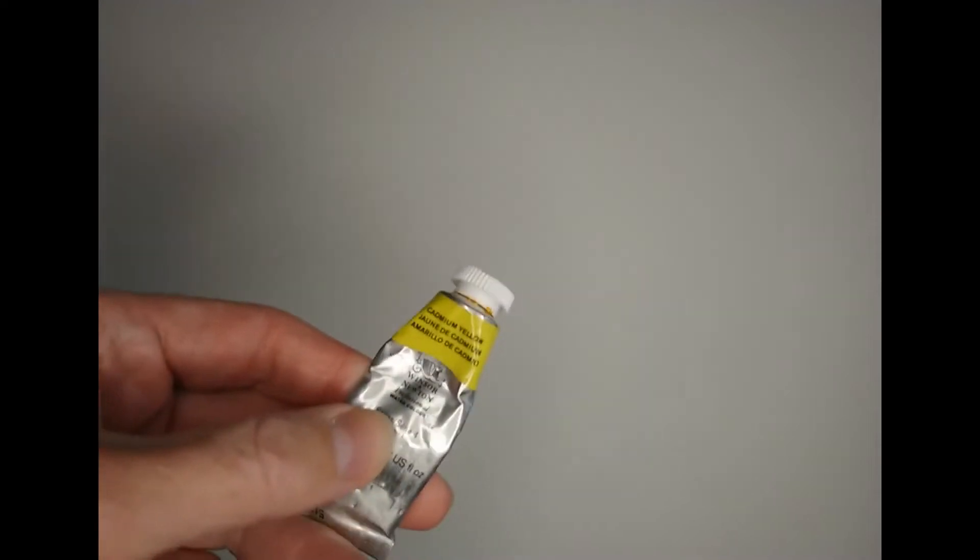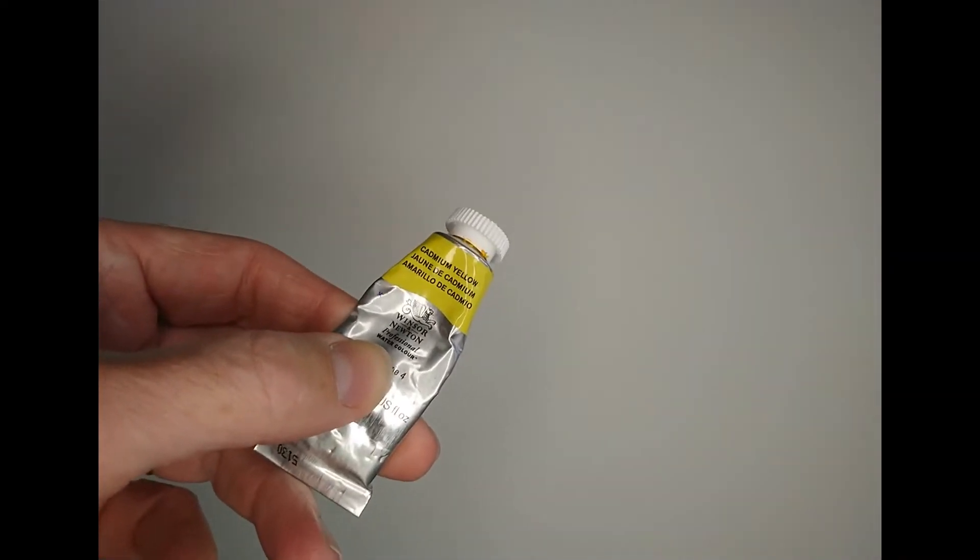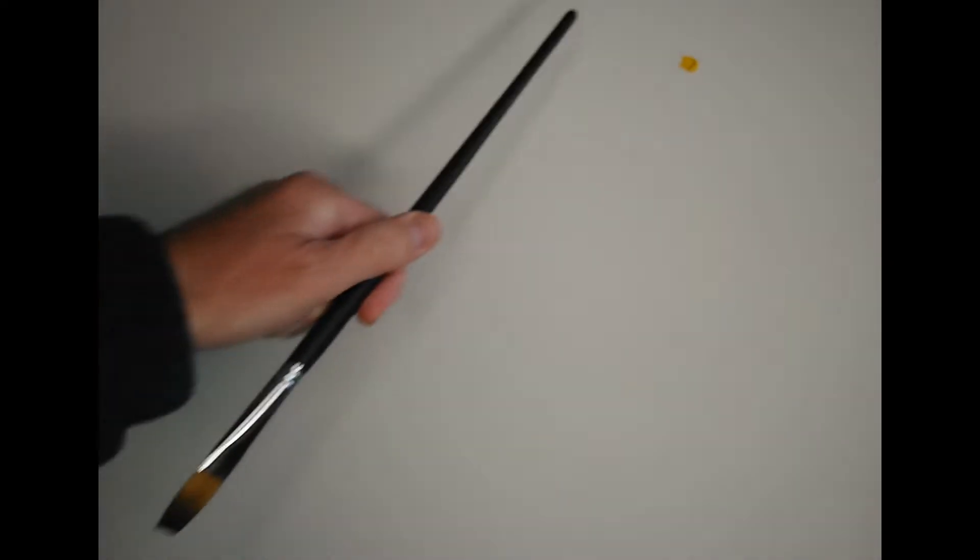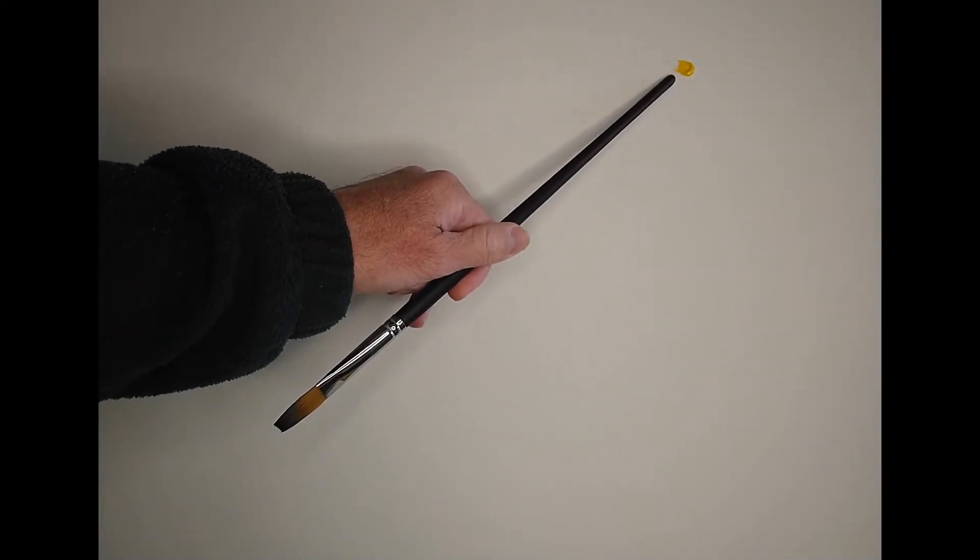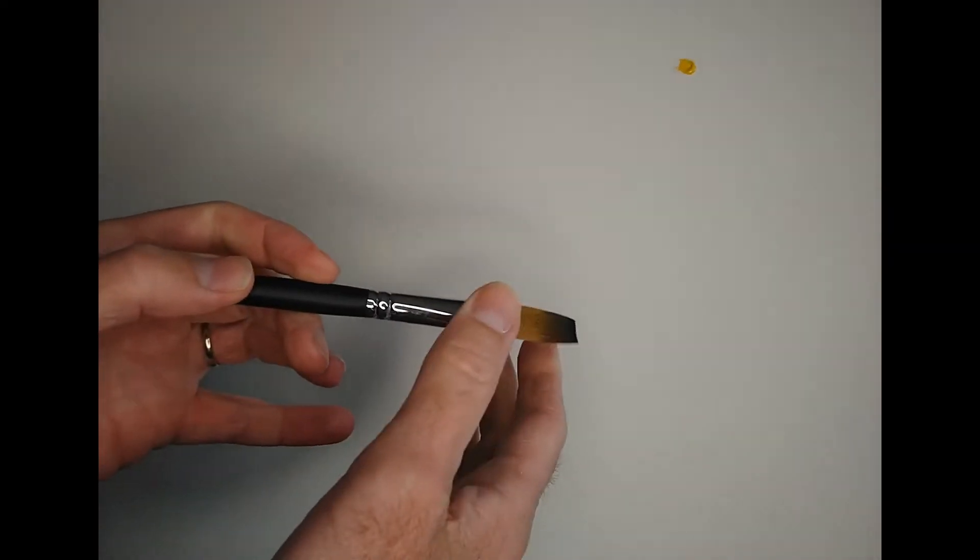So I'm going to use this Winsor & Newton professional watercolor. It comes in a tube as you can see. And these are slightly more expensive than the pans of watercolor that you get in the kits. But of course, you don't need to buy a full set of tubes. And consequently, I think it's pretty good value for money, to be honest. You could just get yourself a set of primary colors and a couple of browns or something to start off with. And it's a good way to just see what can be achieved with watercolor.